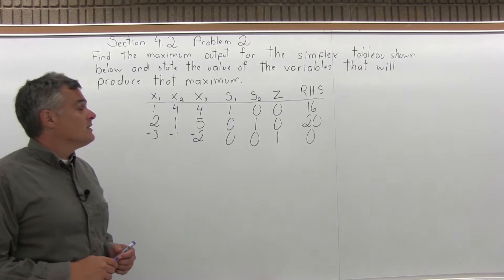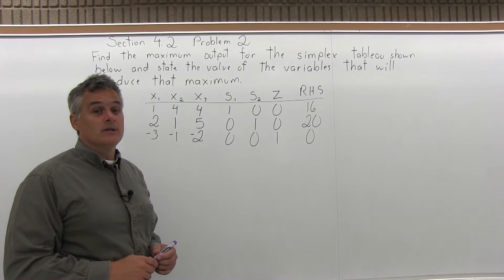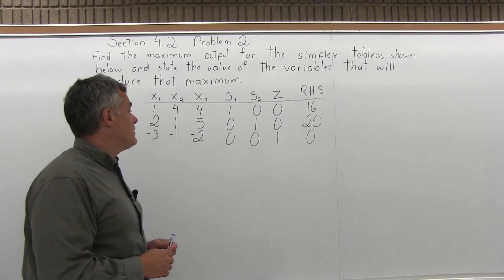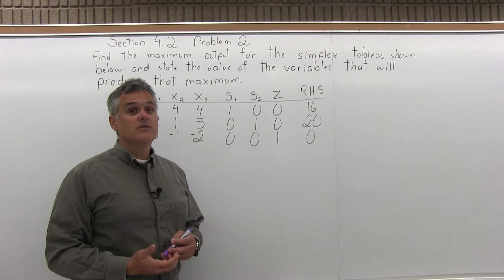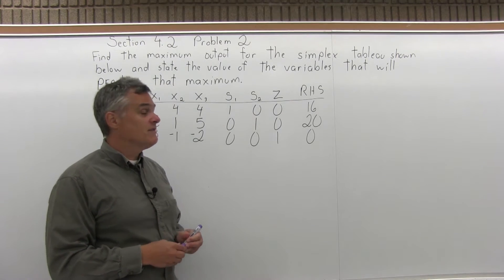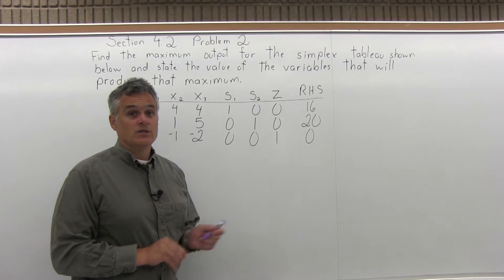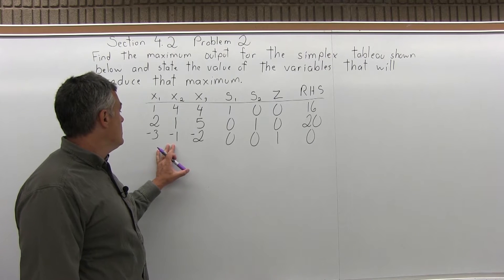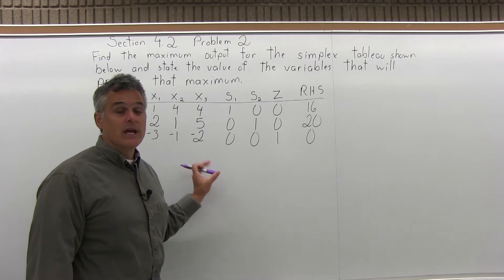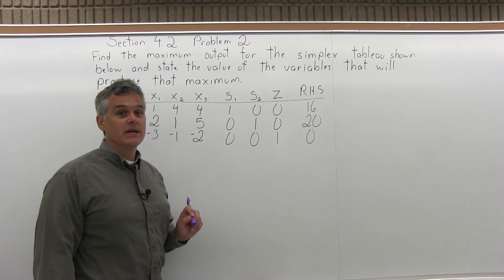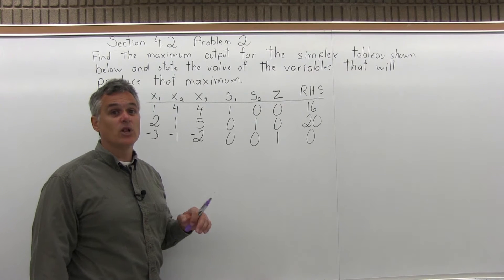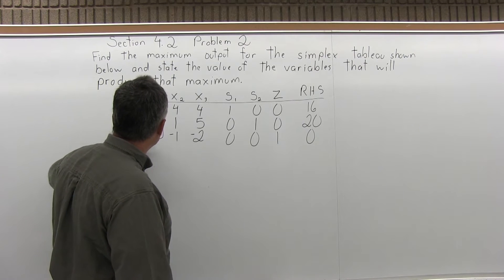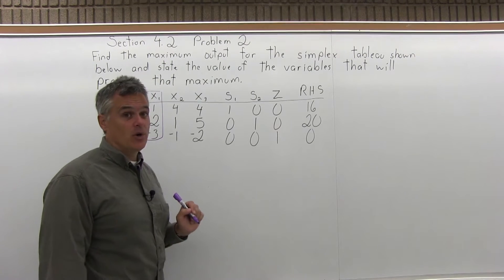To find the maximum, we need to pivot this simplex tableau. We find the pivot by first finding the pivot column — the most negative value in the bottom row. The negative values are negative 3, negative 1, and negative 2. Negative 3 is the most negative and it occurs in the far left column, the x1 column. So my pivot will be in the x1 column.